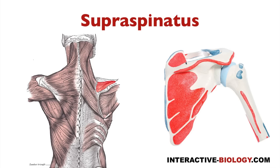Now if you remember when we looked at the scapula, we looked at the fact that on the posterior or the dorsal surface you have the spine of the scapula that we're showing in this model right here. And above that we have the supraspinus fossa, below that we have the infraspinus fossa. The supraspinatus muscle is going to originate right there in that supraspinus fossa — all of the supraspinus fossa is the origination point of supraspinatus.